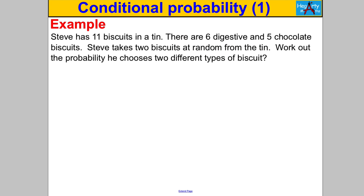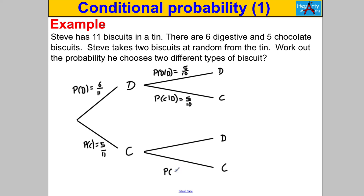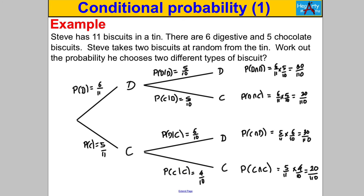For the last question — pause the video and have a go — I'll draw the probability tree and work it all out. The probability of choosing two different types of biscuit is either this scenario or this scenario. Adding them together gives sixty out of one hundred and ten, which you can simplify by dividing top and bottom by ten to get six elevenths. And that's it for this video, thanks for watching.